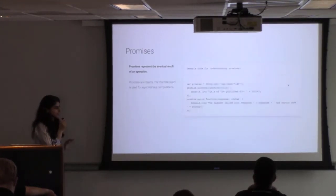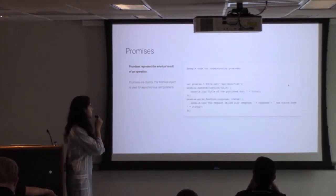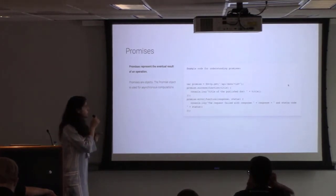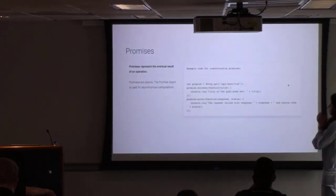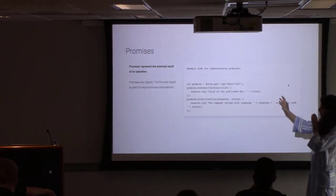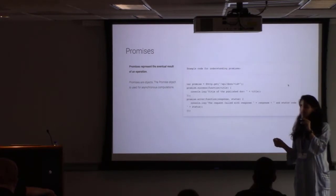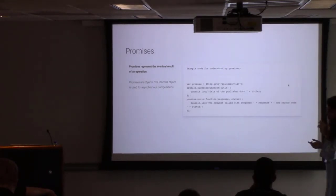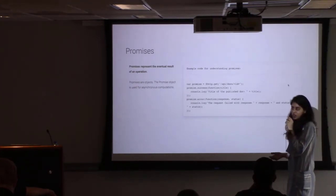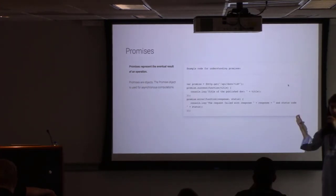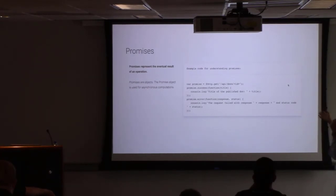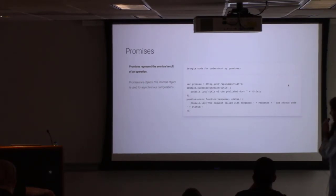Promises represent the eventual result of an operation. A promise object is used for asynchronous computation. For example, making an HTTP GET request to `api/docs/:id` might return the title of a document. We take the promise object and use a success handler to log the title, and define what happens when the request fails — logging the response and status code.